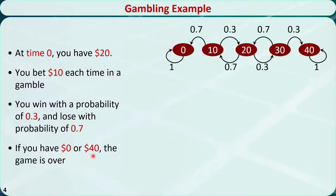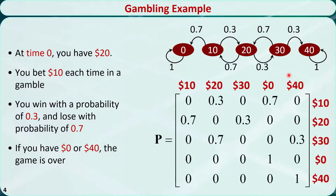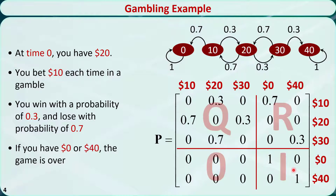The states represent the money you have after each gamble. This is a Markov chain. There are two absorbing states, $0 and $40. This is the state transition probability matrix. We arrange this matrix in a way that the absorbing states 0 and 40 are at the bottom right corner. The top left corner is Q, the top right corner is R, and the bottom left corner is 0.